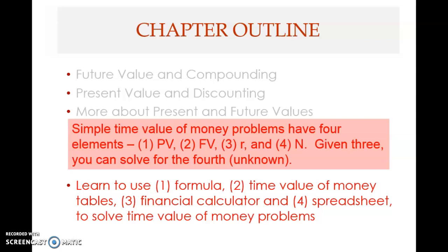There are four tables in the textbook. We'll use the first two in this chapter; the next two will be used in the next chapter when we discuss advanced time value of money techniques. The third method is a financial calculator, and the fourth is a spreadsheet. The main method to focus on is the formula, because it's available and usable anytime.